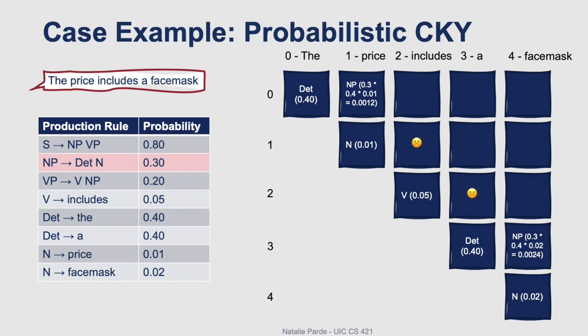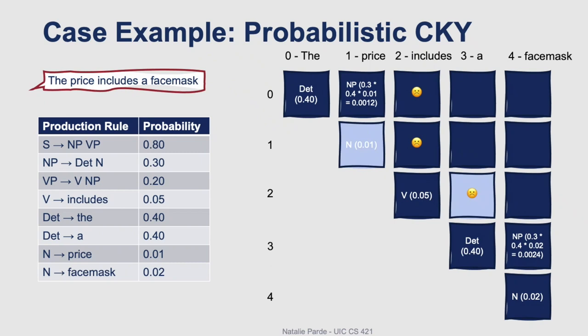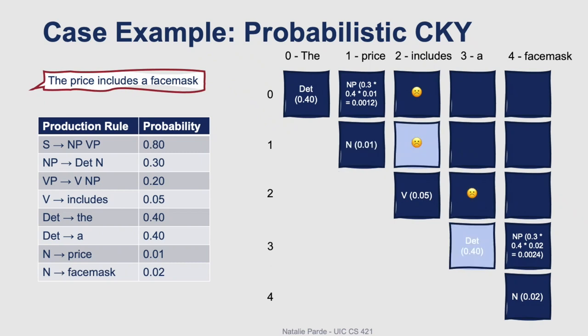Now we can move on to three-word constituents. We'll start out with "the price includes". The first possibility would be impossible given what we've computed so far, but the second thing we could check for would be a noun phrase followed by a verb — there aren't any production rules that match that though, so we can't fill this spot. Next, we'll be checking "price includes a", but we can't do anything with either option, so we can't fill that cell with any constituents either.